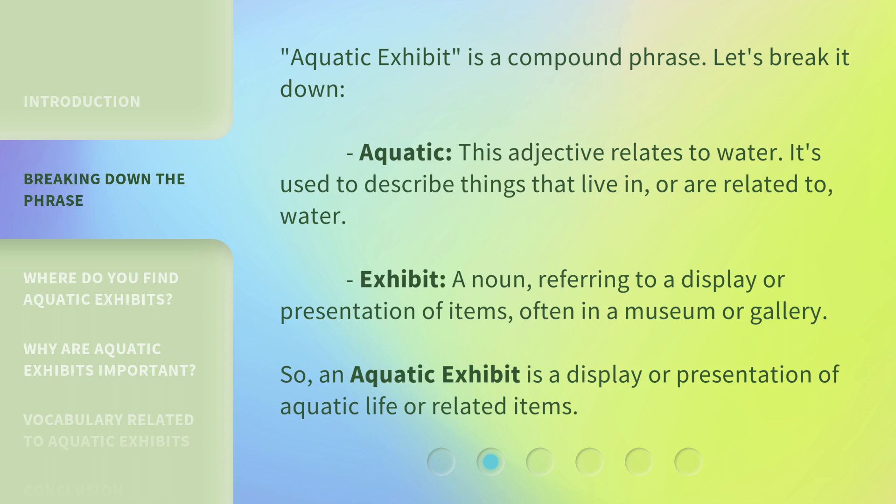Aquatic exhibit is a compound phrase. Let's break it down. Aquatic: this adjective relates to water — it's used to describe things that live in, or are related to, water. Exhibit: a noun referring to a display or presentation of items, often in a museum or gallery. So, an aquatic exhibit is a display or presentation of aquatic life or related items.